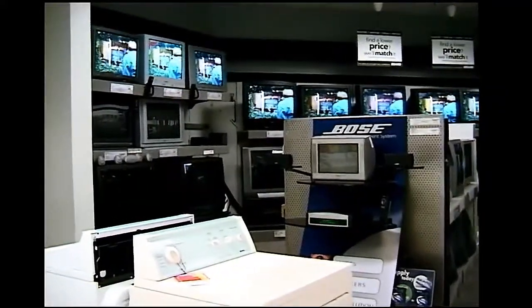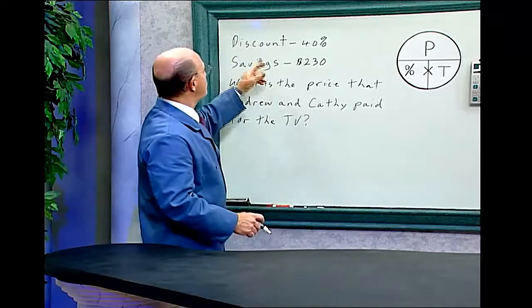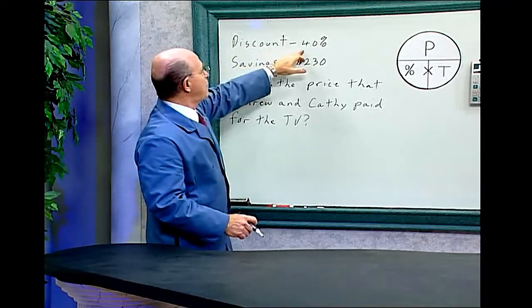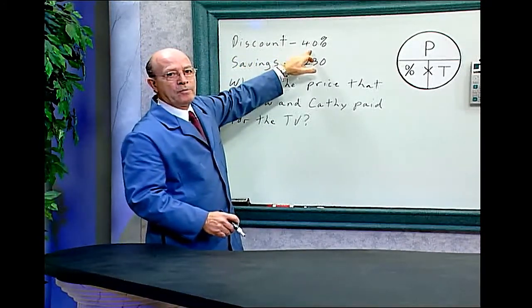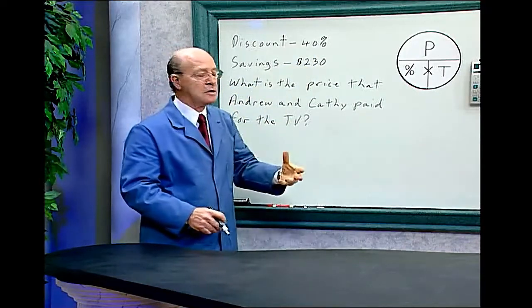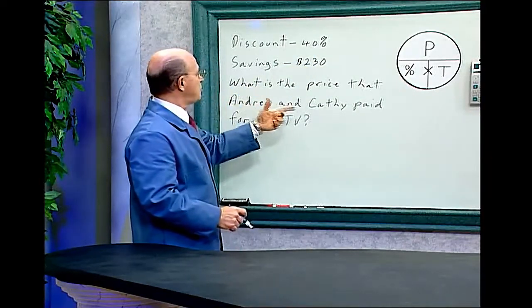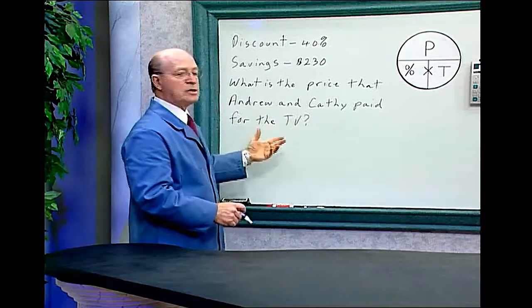Let's do the math. Andrew and Kathy said they had a discount of 40 percent for the TV that they bought, and they saved $230. So we want to find out what is the price that Andrew and Kathy paid for the TV.